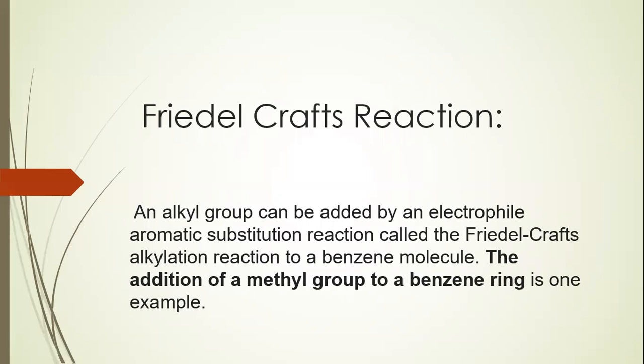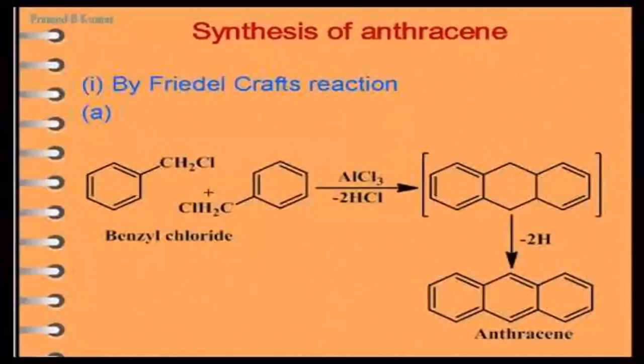Number one is the Friedel-Crafts reaction. An alkyl group can be added by an electrophilic aromatic substitution reaction — for example, the addition of a methyl group to a benzene ring. Here, two molecules of benzene chloride are heated in the presence of catalyst AlCl3, removing two molecules of HCl to give a product. The middle part lacks a complete ring, so two molecules of hydrogen are removed, and Anthracene is obtained.